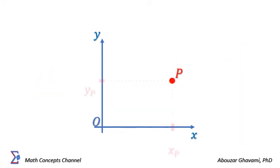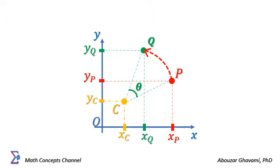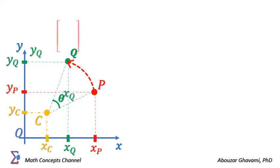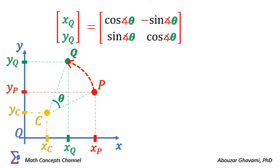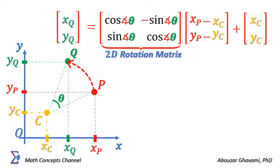Let us consider point P in two-dimensional space, and another point C in two-dimensional space. Let Q denote the counterclockwise rotation of point P with angle theta around point C. We show that the coordinates of point Q are derived as the two-dimensional rotation matrix with elements cosine of theta, minus sine of theta, sine of theta, and cosine of theta, times the difference between the coordinates of point P and the center point C. This two-by-two matrix is referred to as the 2D rotation matrix.